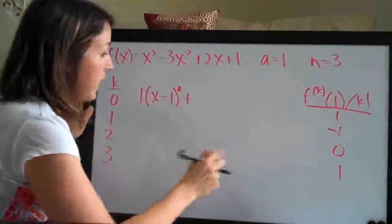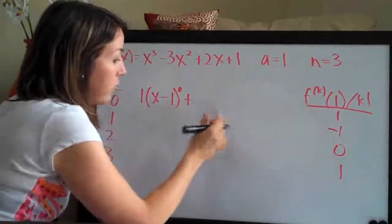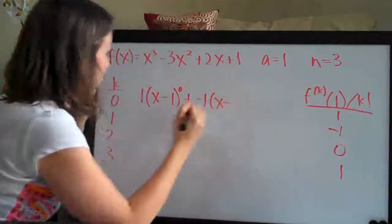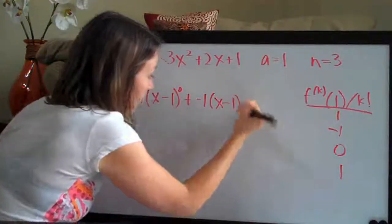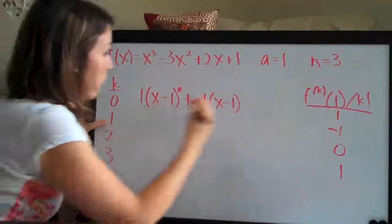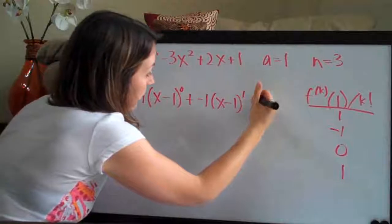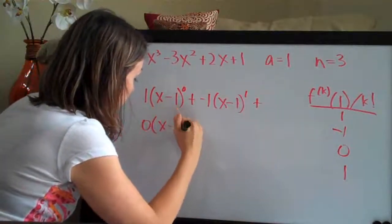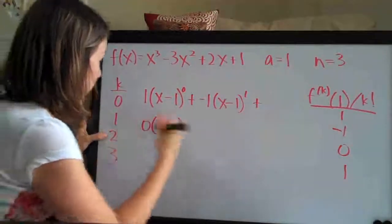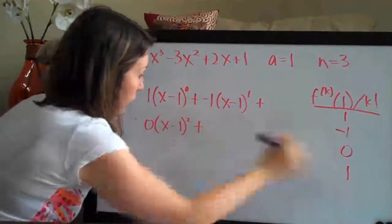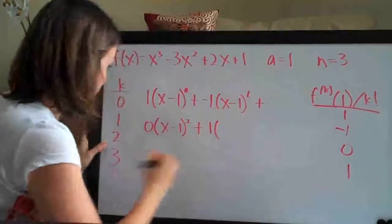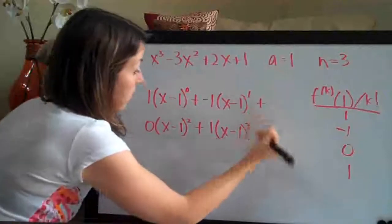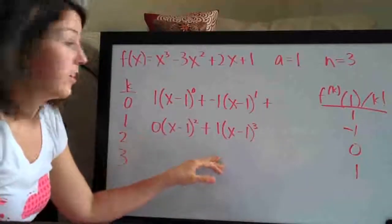So as you can imagine, the second term will be negative 1 here — the coefficient — times x minus 1 again, because it's A, to the first power. Then plus again, 0 for the coefficient times x minus 1 to the second power, plus the next coefficient. And that is our Taylor polynomial.